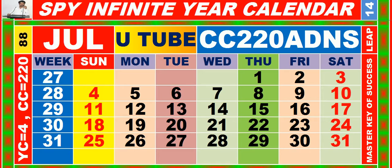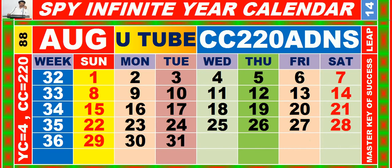Calendar for the month of August, having calendar code equal to 220.